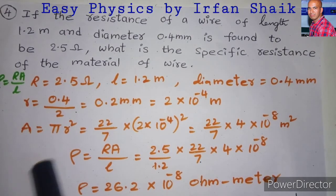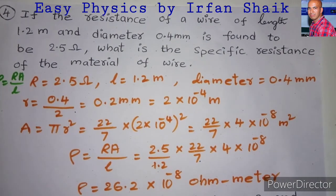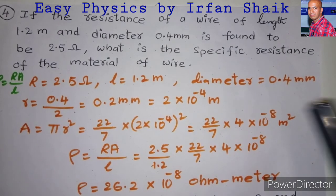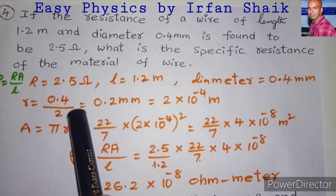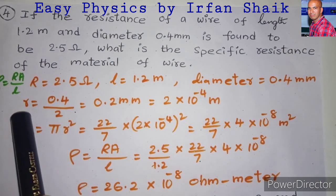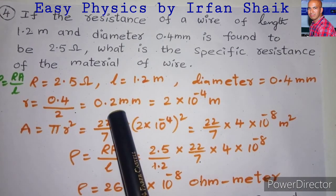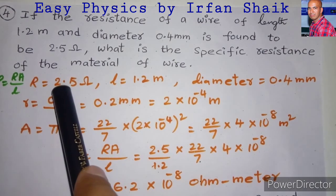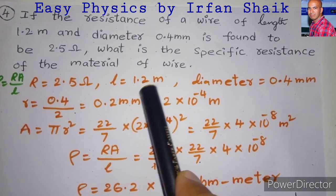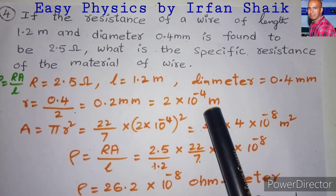How to find the cross-sectional area? We know the diameter, and using it we can find the radius. The radius is half of the diameter because the cross-section of a wire is circular. So the radius is half of the diameter, giving us 0.2 millimeters. The resistance and length are in SI units, so we must convert the radius into meters as well. We get the value as 2 times 10 to the power of minus 4 meters.